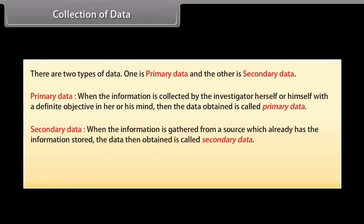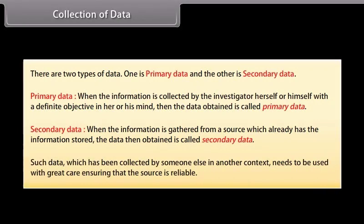Secondary data: when the information is gathered from a source which already has the information stored, the data then obtained is called secondary data. Such data which has been collected by someone else in another context needs to be used with great care, ensuring that the source is reliable.